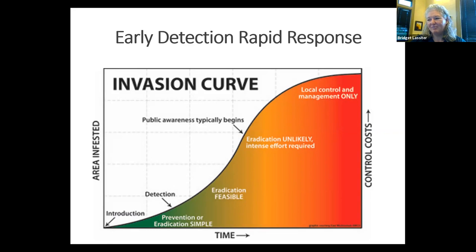We want to find things early on, right after introduction, where that arrow says detection — early in time as well as area infested. If we wait until that pest has reached populations up in the orange or the red, it's going to be very expensive to control and widely distributed. It's really going to be impossible to get rid of that pest. So let's find these bad things early and try to get rid of them early, because it's a lot cheaper and easier. If we wait until they're at the top of the curve, we've already lost the battle.